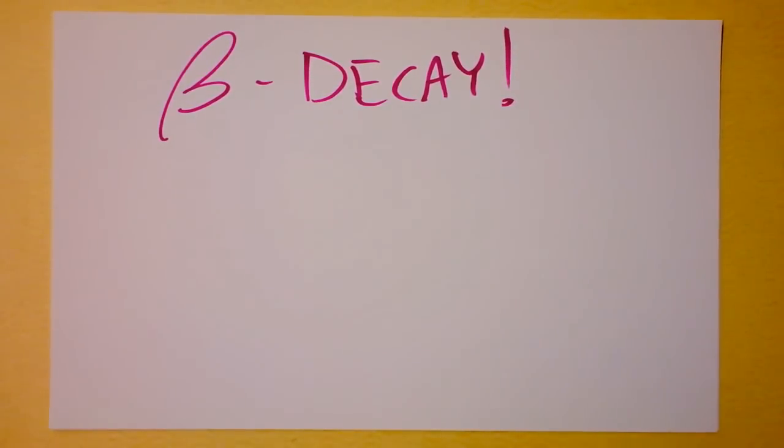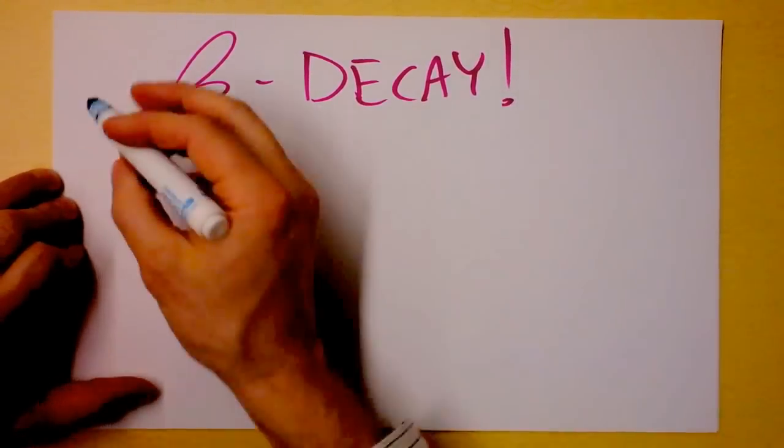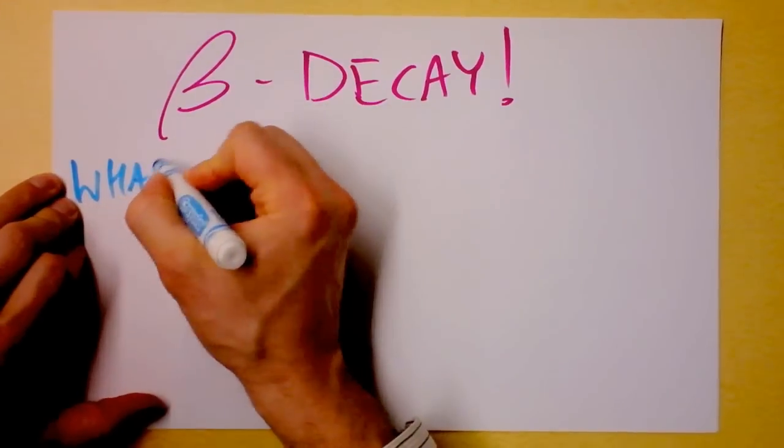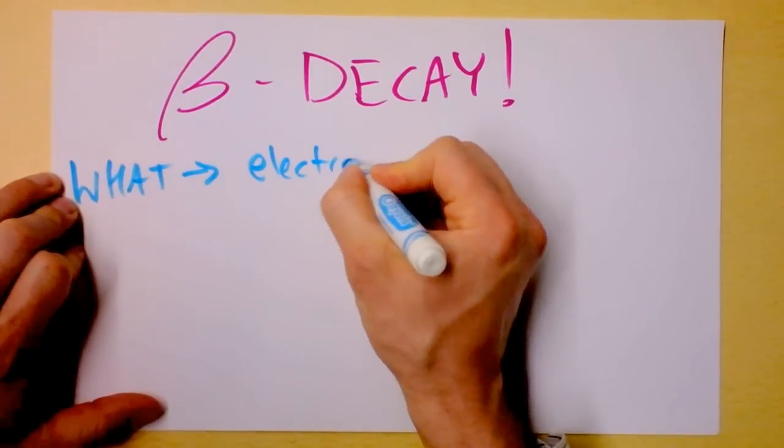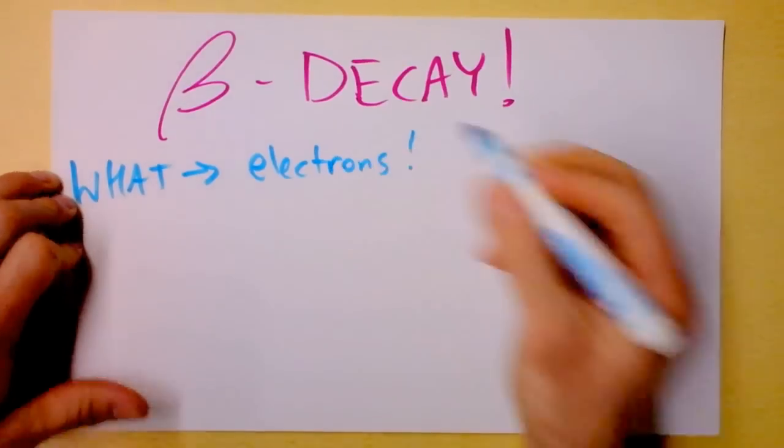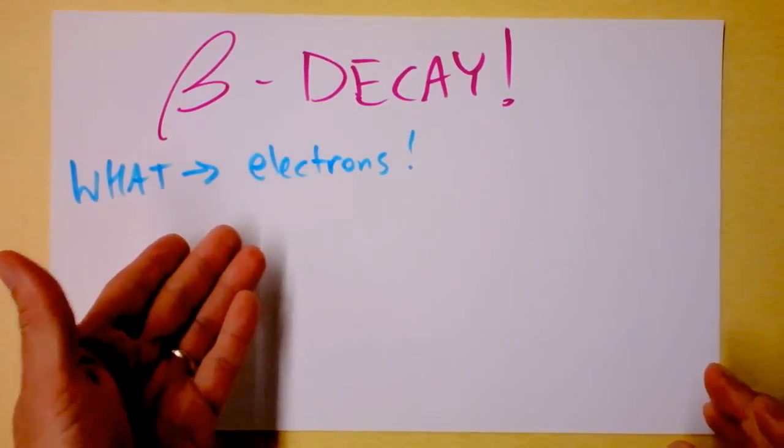And on to beta decay. We're going to do these alphabetically as the Greeks did. The question is what is beta decay? And it turns out that beta decay is electrons flying out of your nucleus. What? What are electrons doing in my nucleus?